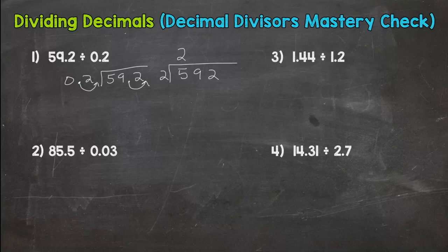5 divided by 2 is 2. 2 times 2 is 4. Subtract I get 1. Bring down that 9. 19 divided by 2 is 9. 9 times 2 is 18.